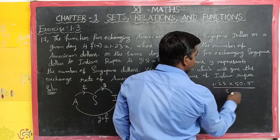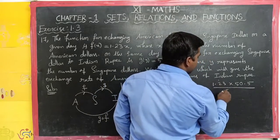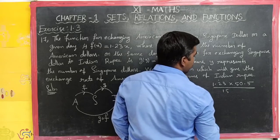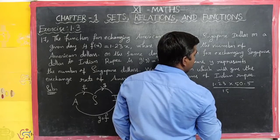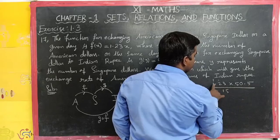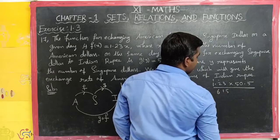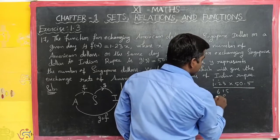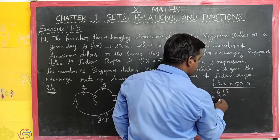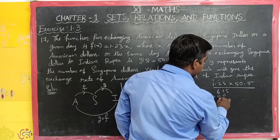1.23 into 50.50. Product of 5 times 3 is 15, remaining 1. 5 times 2 is 10, plus 1 is 11, remaining 1. 5 times 1 is 5, plus 1 is 6.